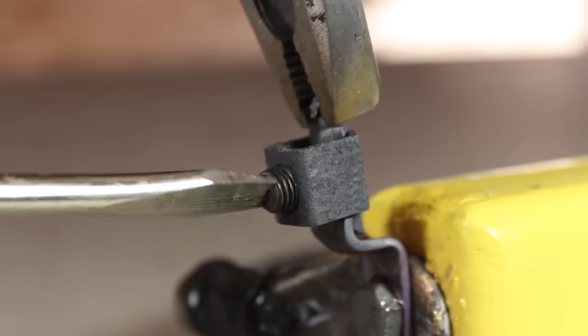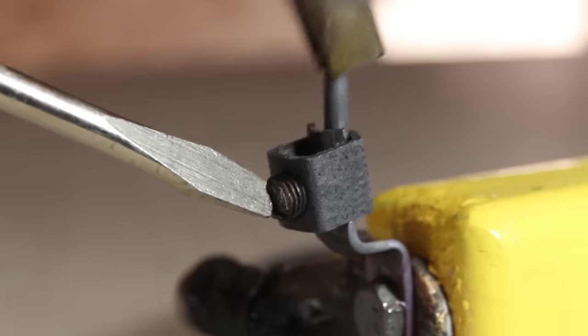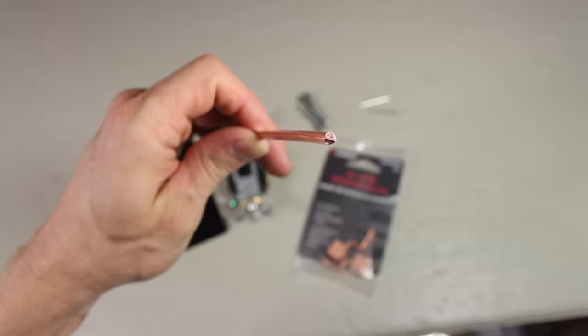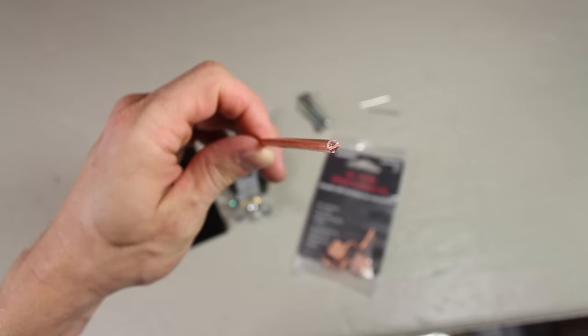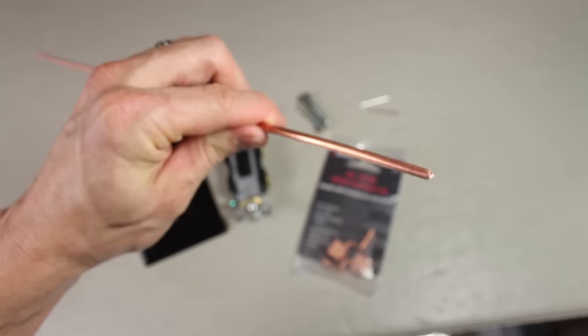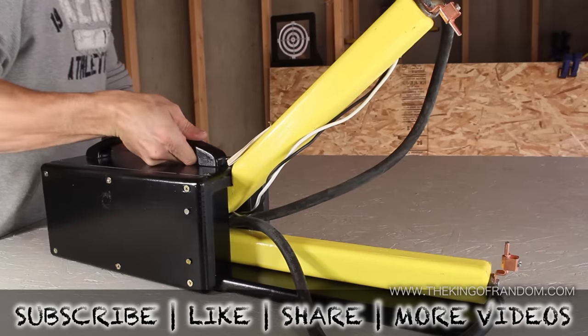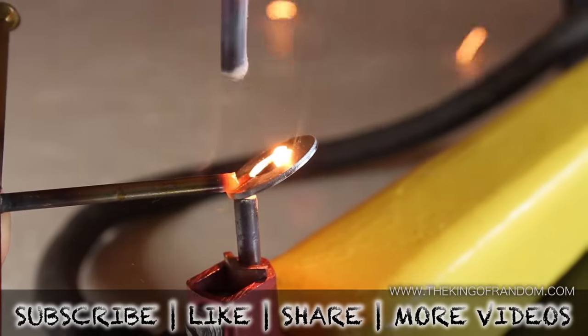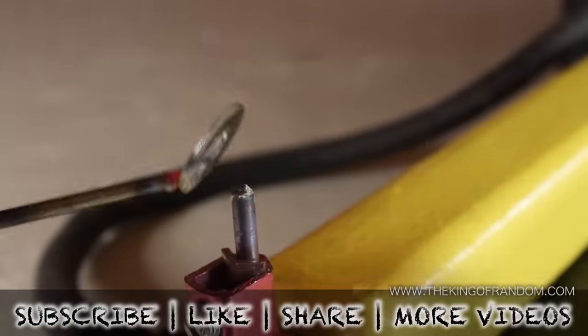When it's time to replace the electrode tips, just loosen the tensioner, remove the spent electrode, and replace with a fresh piece of your copper wire. If you do it this way, you can get about 12 tips for a buck because the wire is not that expensive. Well now you know how to make my version of a spot welder from easily accessible and low cost parts. If you like this project, perhaps you'll like some of my others. Check them out at thekingofrandom.com